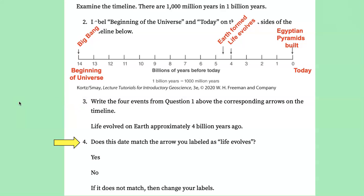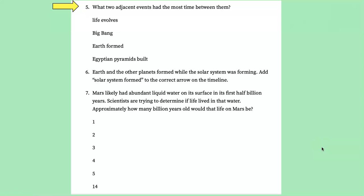Does the date match the arrow you labeled as life evolves at 4 billion years? So you want to make sure that that matches. What two adjacent events had the most time between them? And that would be the Big Bang and the formation of Earth. These events are separated by almost 10 billion years, not million, billion.